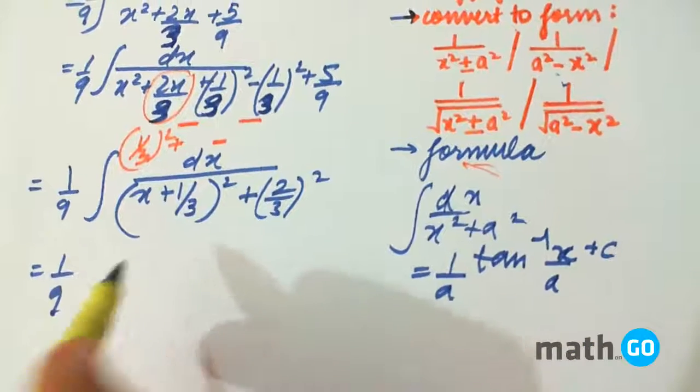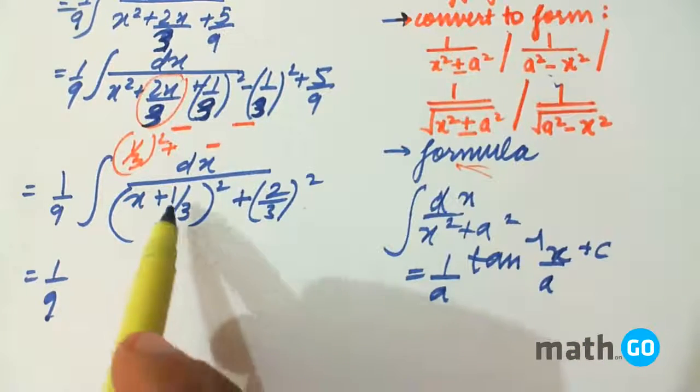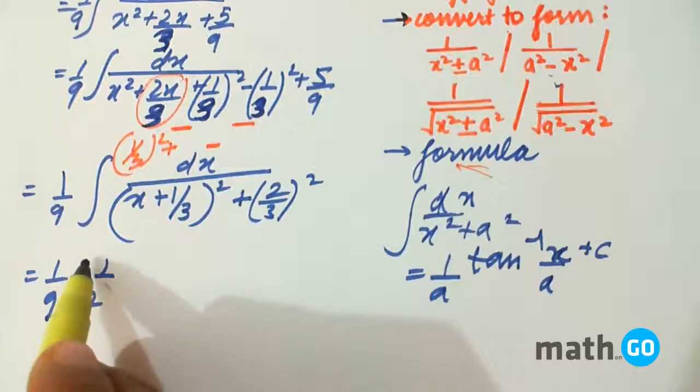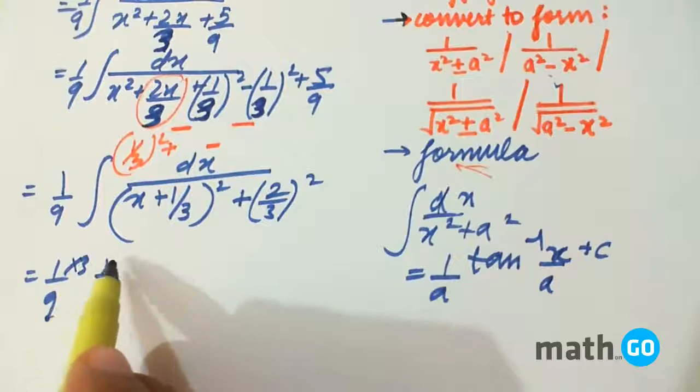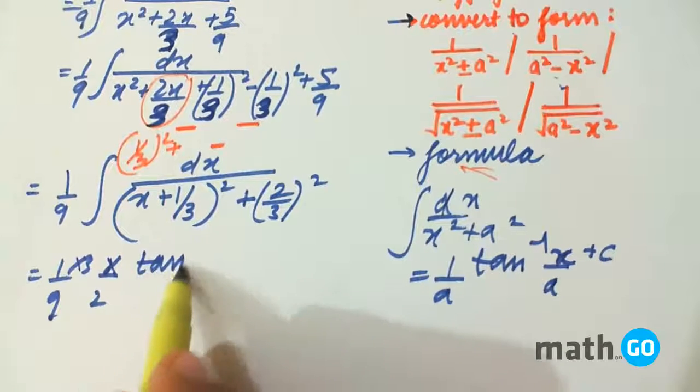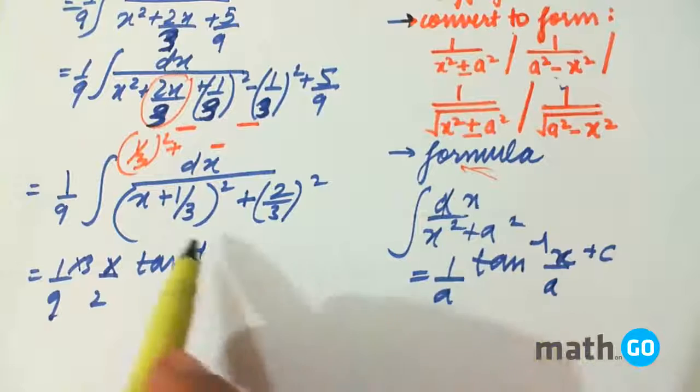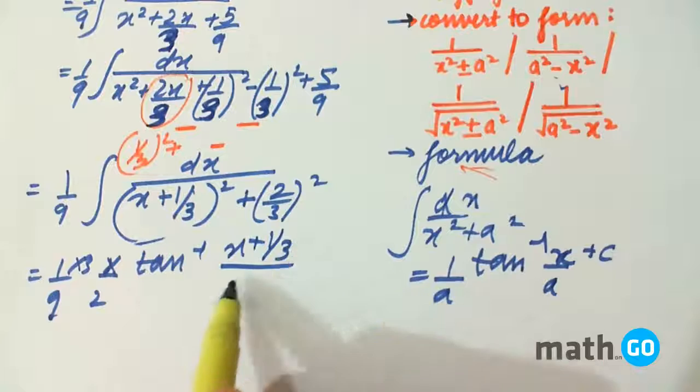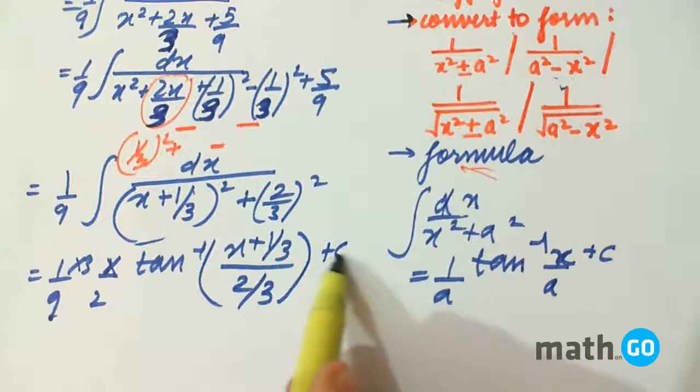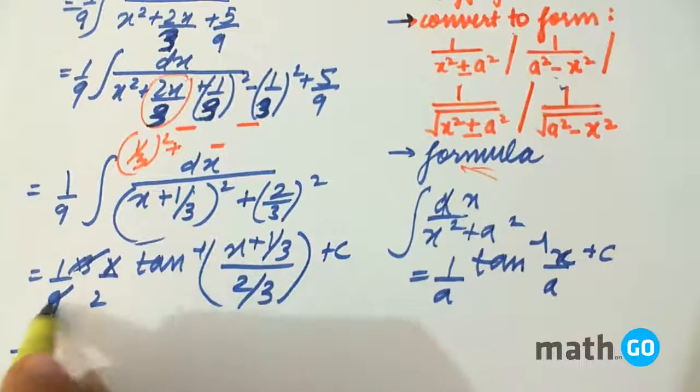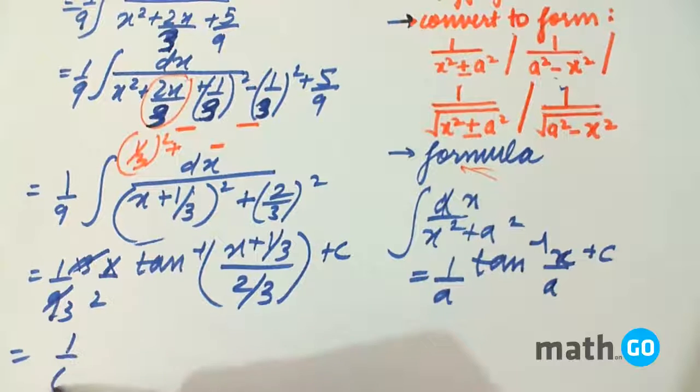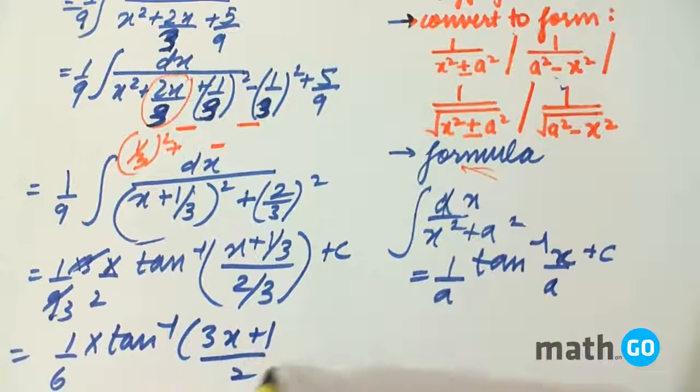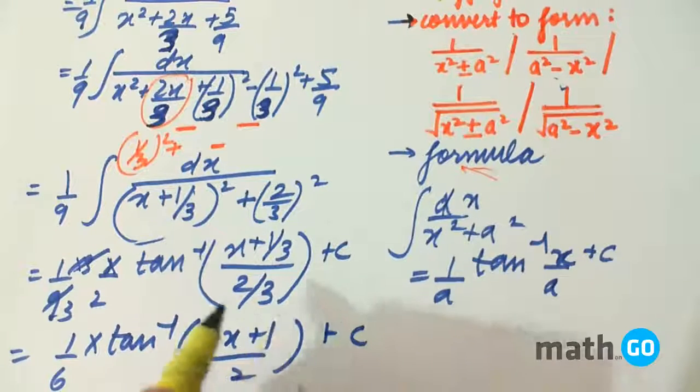Keeping this, we get 1/a where a = 2/3, so that gives us 1/6. For tan⁻¹, x is the complete expression x + 1/3 and a is 2/3. We are giving our final answer: (1/6) tan⁻¹((3x + 1)/2) + c, which is our answer.